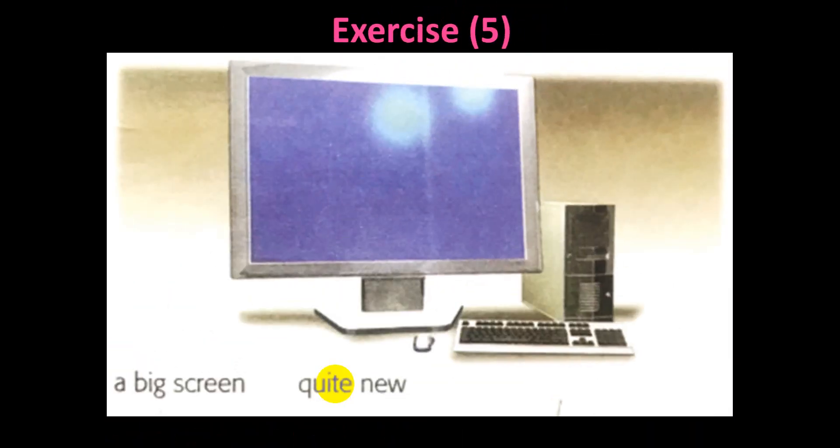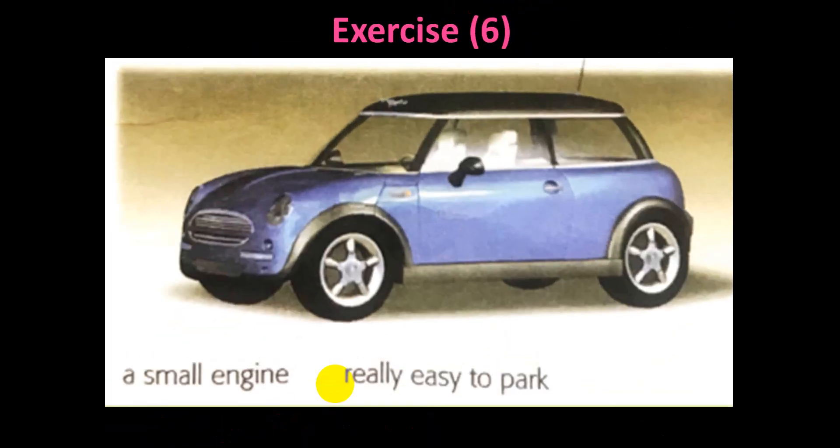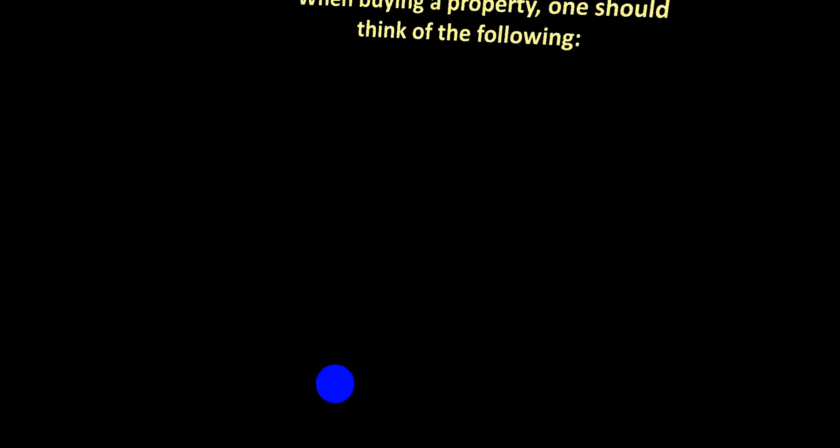Look at this one: this is a new keyboard or mouse or screen. This is a car with a small engine. It's really easy to park—it's a small car, that's why it's easy to park.